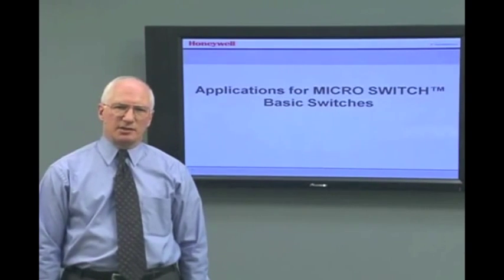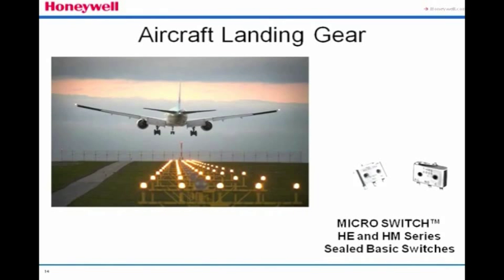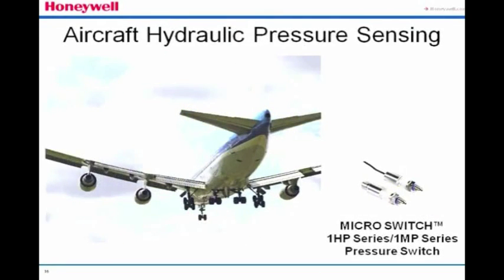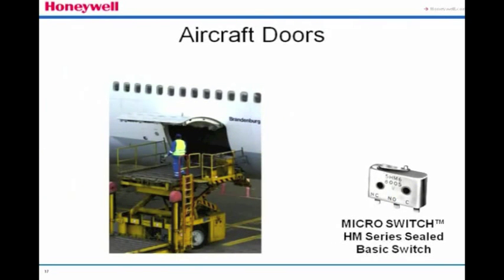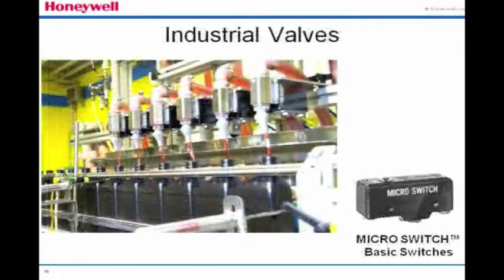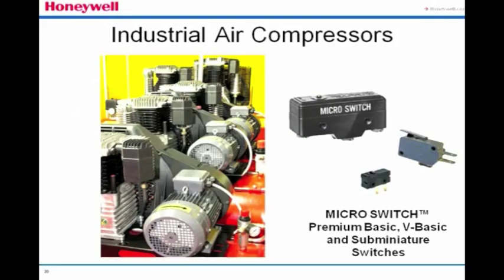Some specific aerospace and industrial applications using Honeywell microswitch technology: in commercial aircraft, our HE and HM sealed switches are frequently used to indicate if the landing gear is up or down. Toggle switches are found in cockpits worldwide. Honeywell's newest 1HP and 1MP series pressure switches are frequently used for hydraulic pressure sensing. The HM series sealed basic switch is used to indicate that aircraft doors are closed. Industrial applications include boiler and damper control in HVAC systems using our large basic and sub-miniature premium switches, valve position detection in oil and gas refineries, waste treatment plants, and other factories, and pressure release valves and air compressors using our premium basic switches.